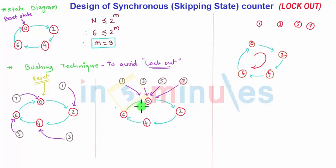So it will jump to the invalid state 1, 3, 5, 7, and within the next clock cycle again it will start from 0. And this is how you can avoid the lockout condition in the skipping state counter, and the technique used is called as bushing technique.